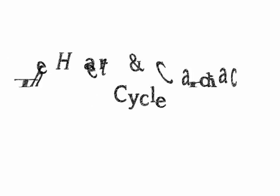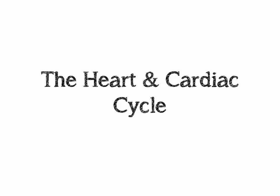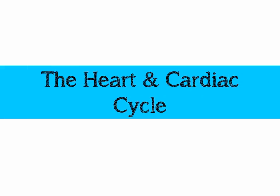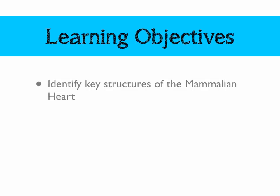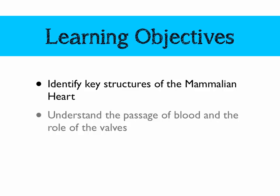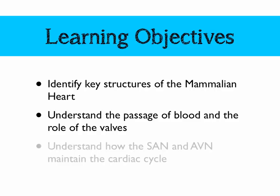In this video, we're going to be looking at the heart and the cardiac cycle, which is one of the more difficult topics on AS Biology Unit 1. We're going to be looking at the structure, the role of the valves, and the heartbeat, and how that's maintained. Our lesson objectives: we're going to identify key structures of the mammalian heart, understand the passage of blood through the heart and the role that the valves play, and understand how the sinoatrial node (SAN) and the atrioventricular node (AVN) maintain the cardiac cycle.